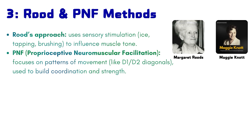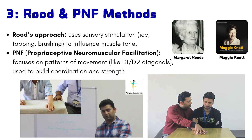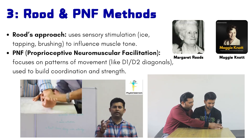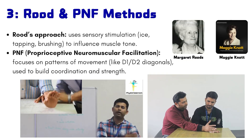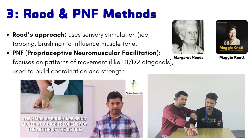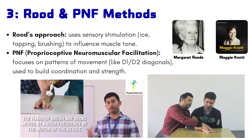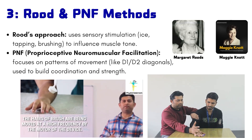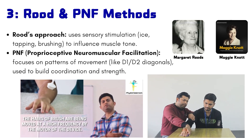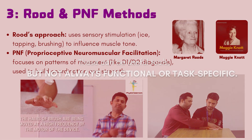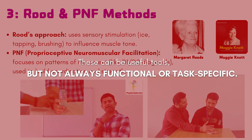Brunnstrom's approach uses sensory stimulation — ice, tapping, brushing — to influence muscle tone, along with inhibitory techniques to control tone. PNF, or proprioceptive neuromuscular facilitation, focuses on patterns of movement like D1 and D2 diagonals, used to build coordination and strength. These can be useful tools, but not always functional or task-specific.